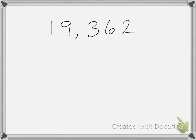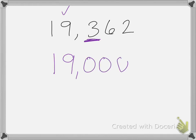Let's try rounding this to the nearest thousands place. I check the thousands and look to the number to the right — is three five or more? No, it's not. So the nine stays the same, the one stays the same, and everything else becomes a zero. And that's it for this lesson. Good luck on your homework.